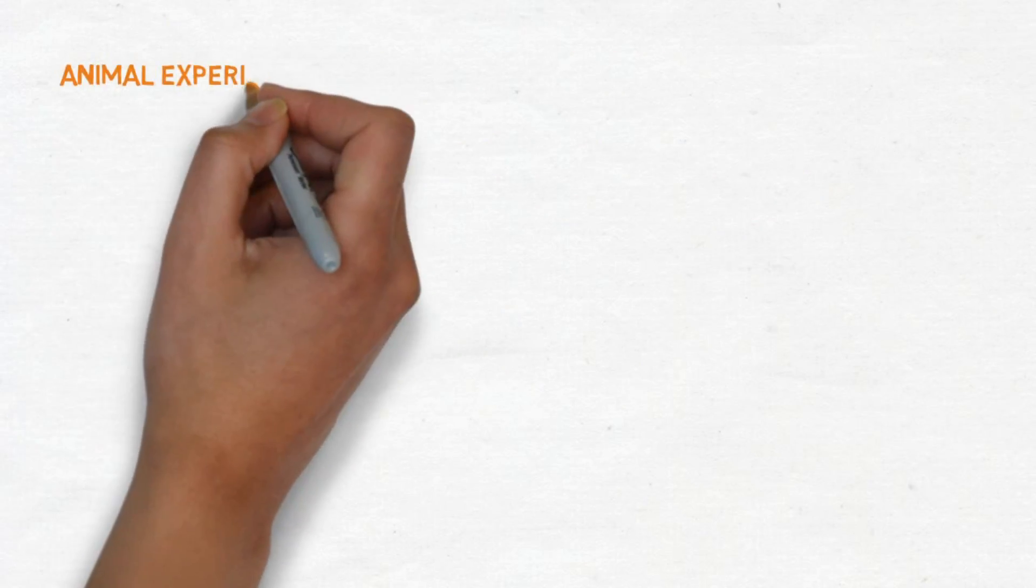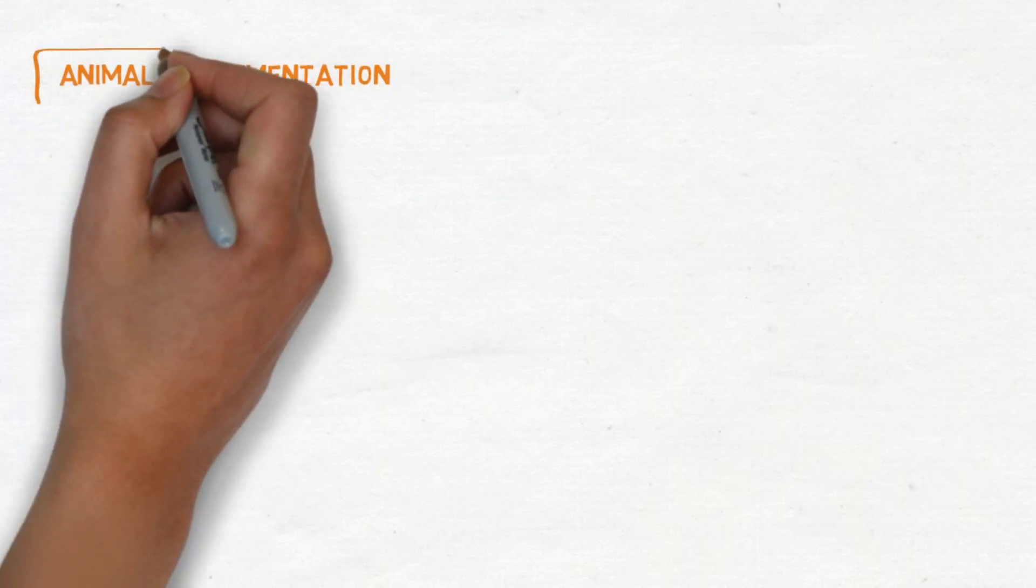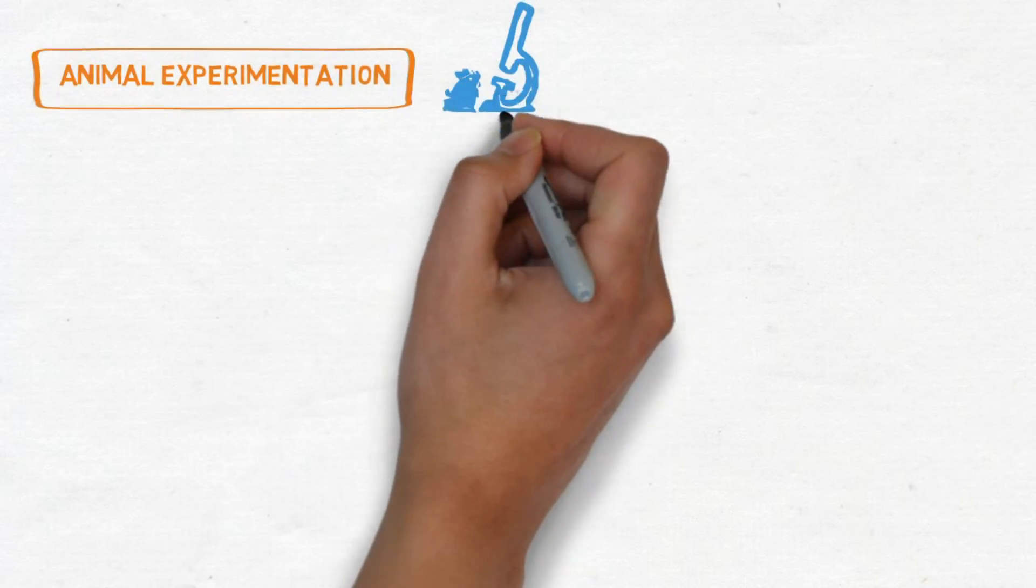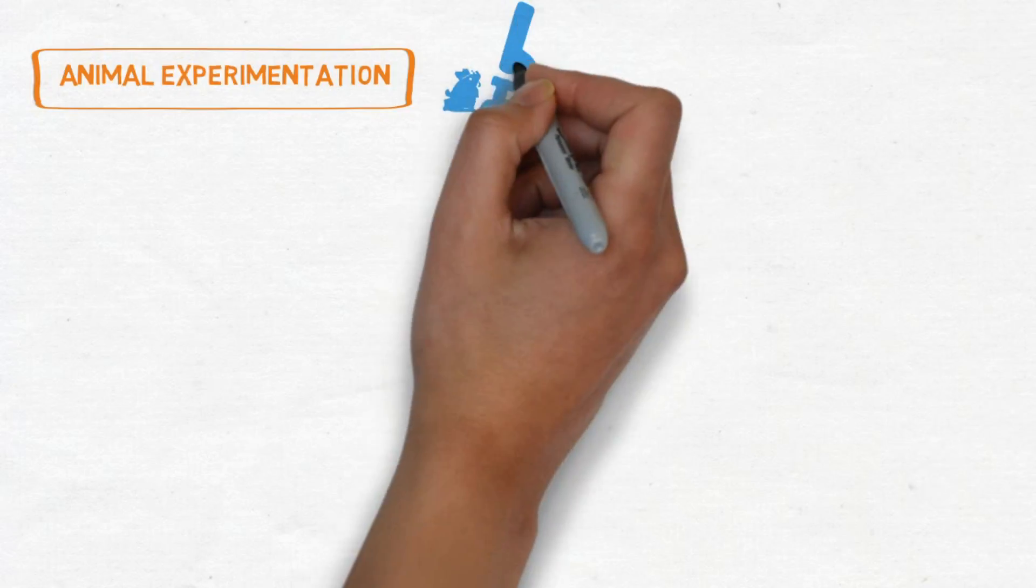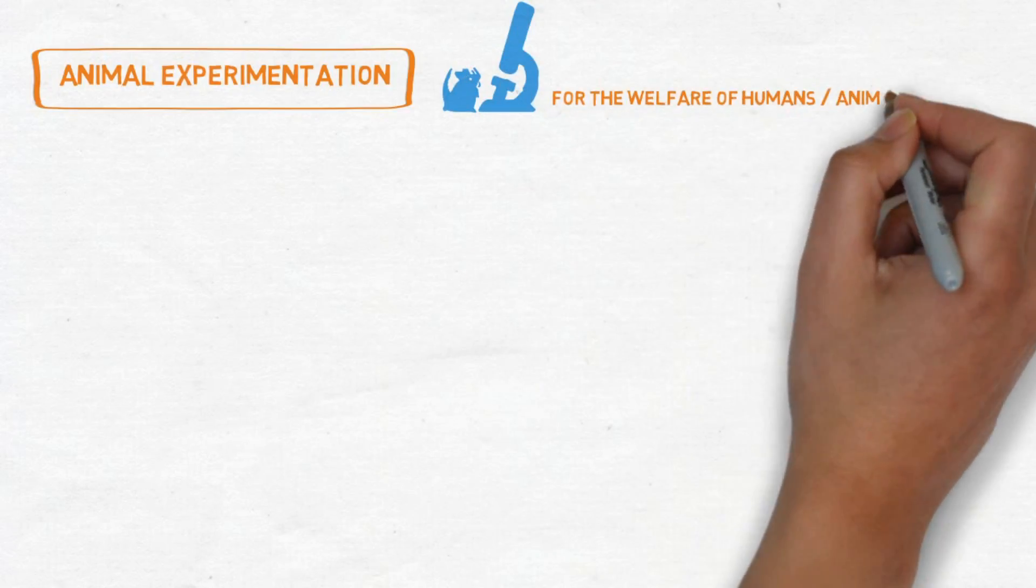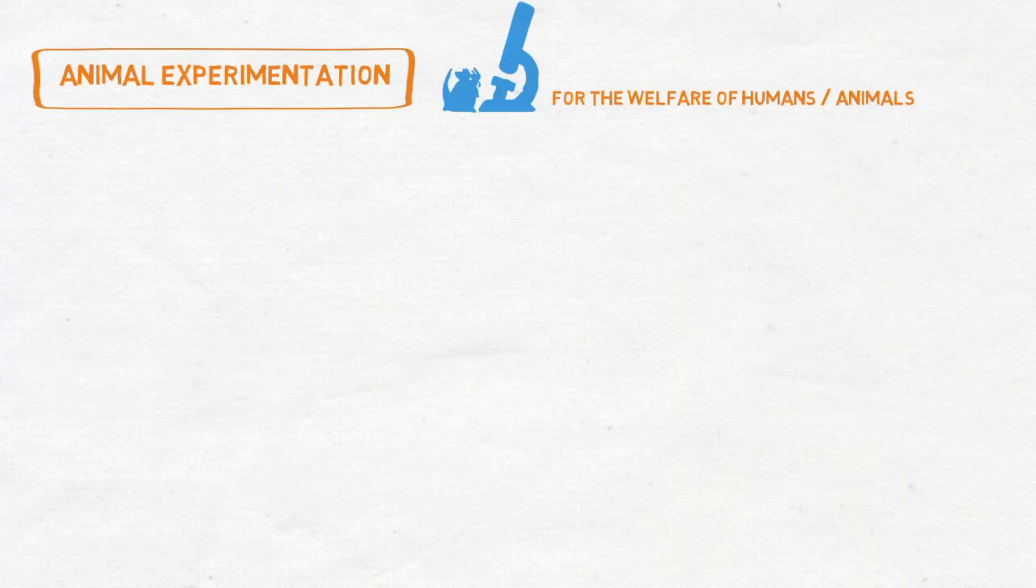Let's start with animal experimentation. Animal experimentation or animal research is the use of non-human animals in experiments. Research involving animals will contribute to present and future knowledge, which may eventually lead to the protection and improvement of the health and welfare of either humans or animals.